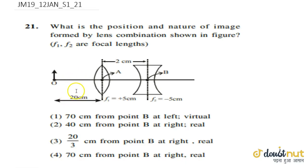Hello guys, in this session we are going to discuss a problem of JEE Main exam. The question given to us is: what is the position and nature of image formed by lens combination shown in figure? f1, f2 are focal lengths.